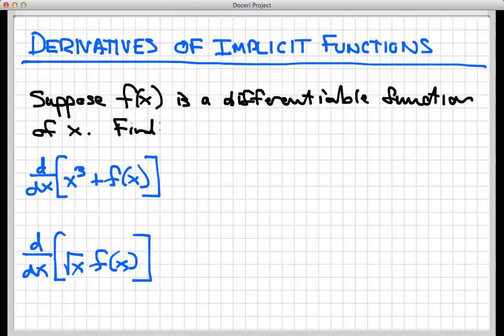So with that minimal amount of information, let's try to find some derivatives here. So first of all, let's take the derivative of x cubed plus f of x. Well, I'm going to proceed through the derivative taking process just like I normally would, and that means I can use the sum rule to turn this into the derivative with respect to x of x cubed plus the derivative with respect to x of this mystery function f of x.